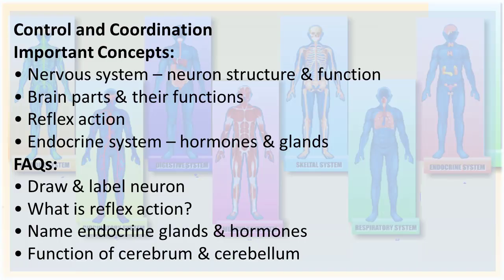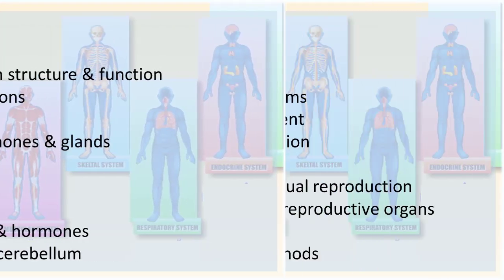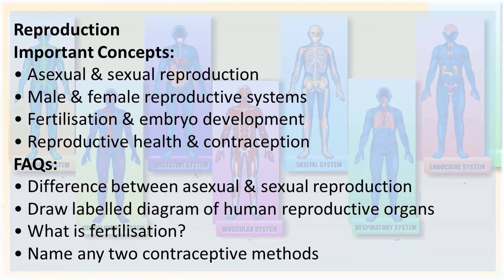From Control and Coordination, important concepts are the nervous system, neuron structure and function, brain parts and their functions, reflex action, endocrine system, hormones and glands. FAQs are: draw and label a neuron, what is reflex action, name endocrine glands and their hormones, and functions of cerebrum and cerebellum.